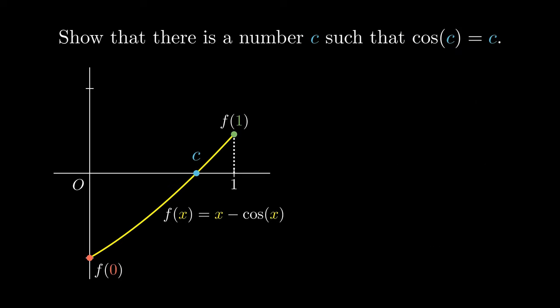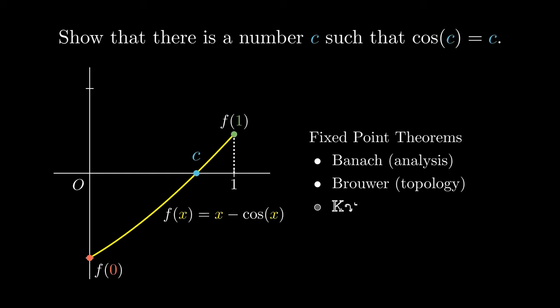More generally, this is an example of a fixed-point theorem. The Banach fixed-point theorem common in real analysis can be generalized to the Brouwer fixed-point theorem in topology and further generalized to the Kakutani fixed-point theorem used in game theory, which the mathematician John Nash used to prove the existence of Nash equilibria.